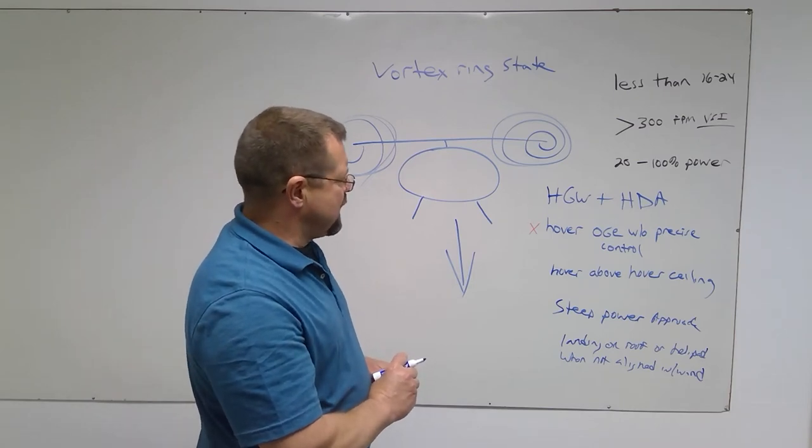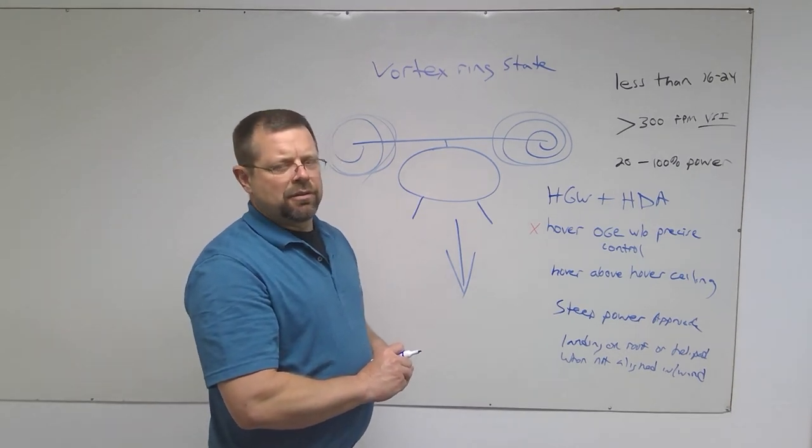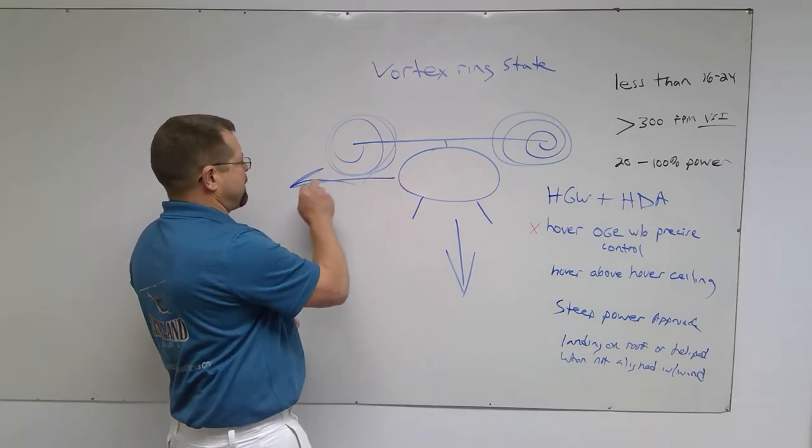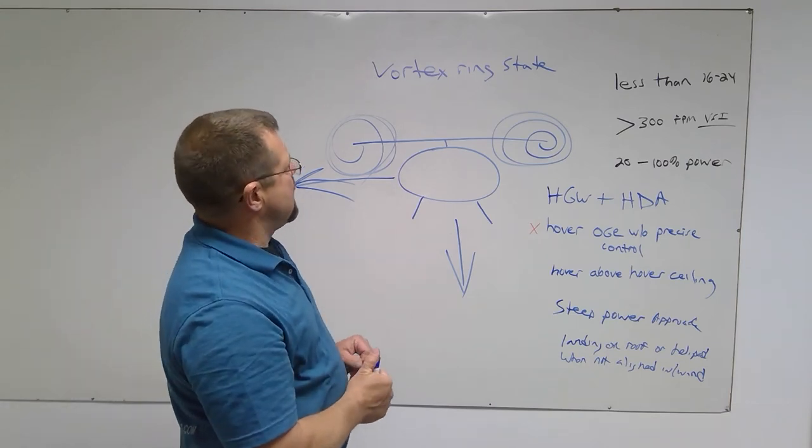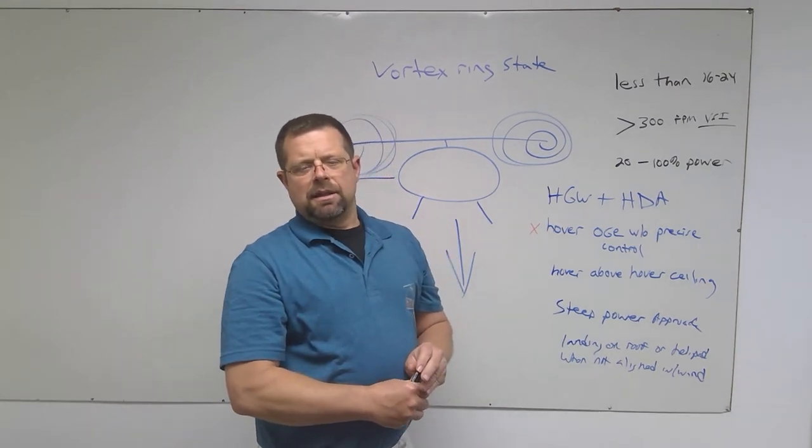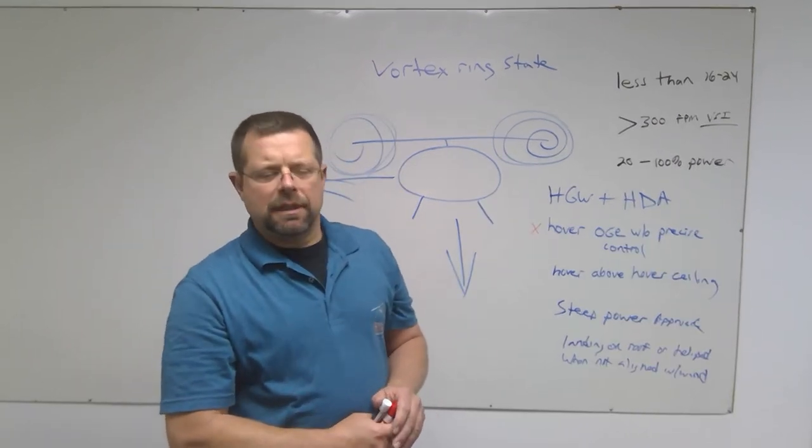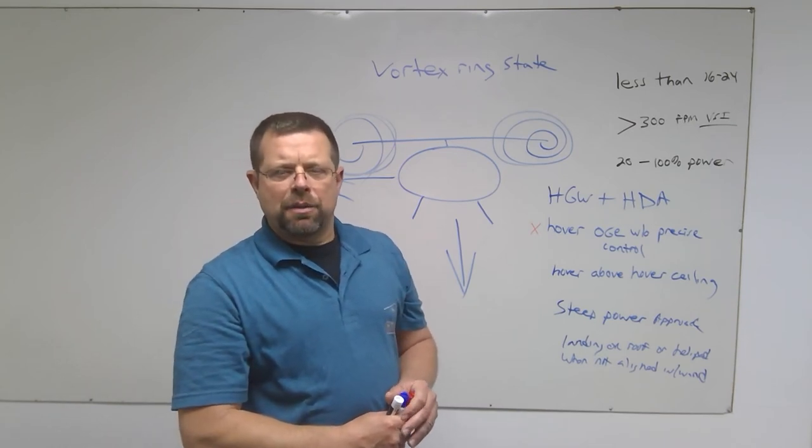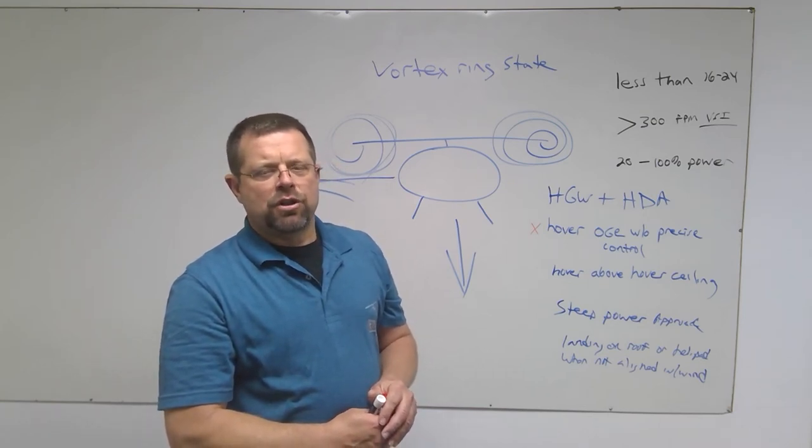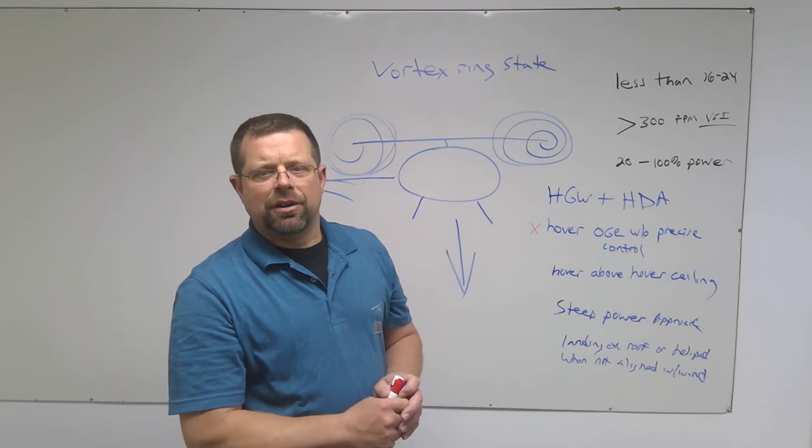There's another method of recovery that recovers the helicopter with less loss of altitude. It's called the Vuichard method. So this method, we move the helicopter rapidly to the side. If you're flying a helicopter that is a counterclockwise rotating helicopter, meaning that the tail rotor is on the left thrusting to the right, and the helicopter gets into settling with power at low altitude, you would actually push on the left pedal, right cyclic, and lift up on the collective. By pushing on the left pedal, you will be adding tail rotor thrust to the right. You put the cyclic to the right, tilting the rotor system to the right.